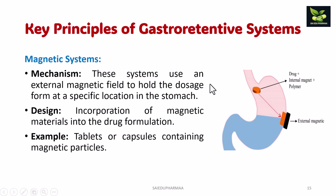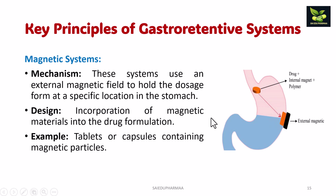The next principle is magnetic systems. These systems use an external magnetic field to hold the dosage form at a specific location in the stomach. Drug plus internal magnet plus polymer is incorporated into the formulation, and an external magnet helps hold it at the surface of the stomach. Examples are tablets or capsules containing magnetic particles.